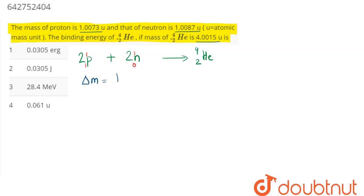defect can be written as mass of reactants minus mass of product. So this is 2 times mass of proton plus 2 times mass of neutron minus mass of helium nuclei. This will be the mass defect.